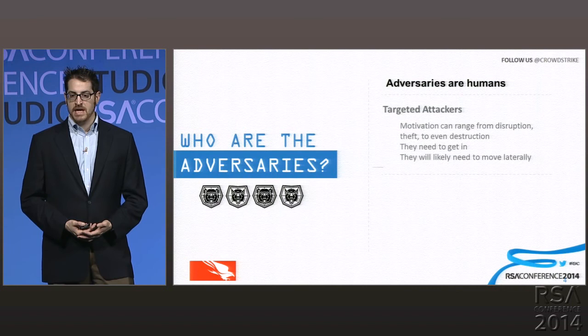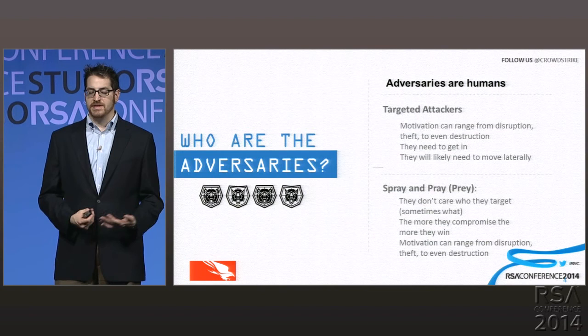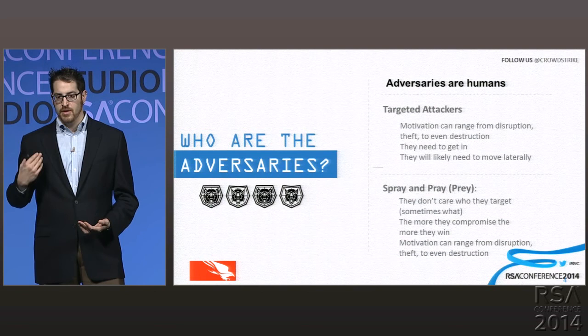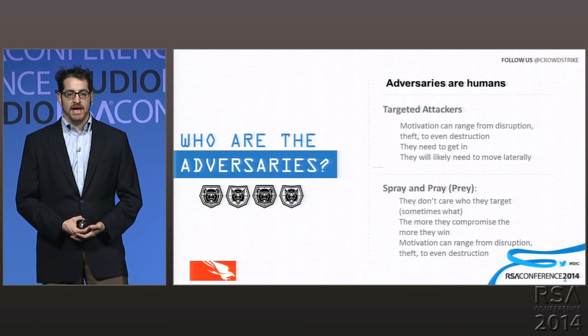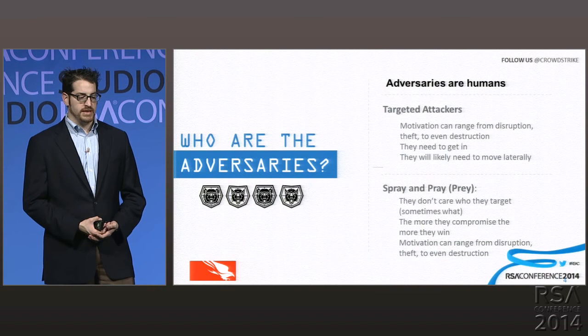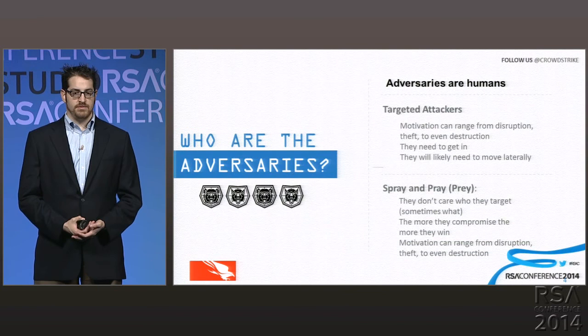They're going to need to perform a privilege escalation attack, move laterally, and do a lot of things that expose themselves during the course of their operation. The other type of attacker is what I would call spray and pray — and they don't really care who they target. They're going to compromise a website with an exploit kit and try to hit whoever might be passing by. They're probably looking to steal account credentials, use that machine's resources for sending out spam, or conducting a denial of service attack. The more machines they compromise, the more victims they find, the more they win.